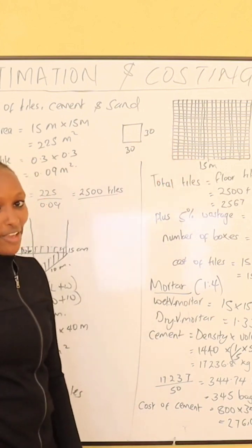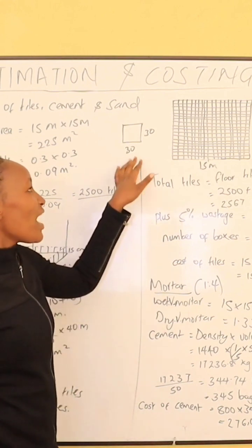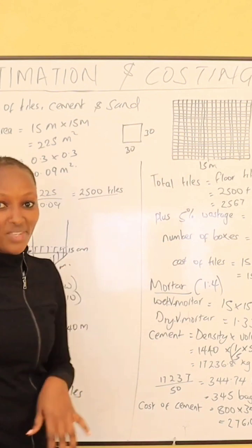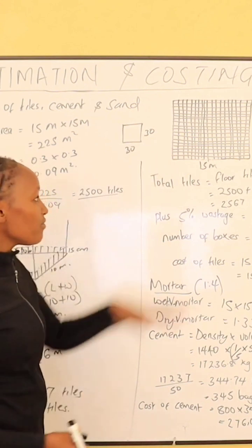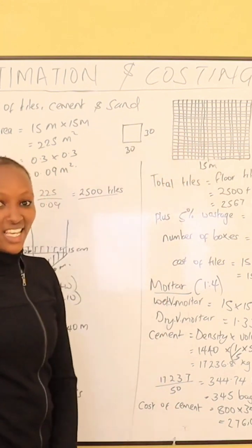The total area is 225 meters squared. One tile we shall take is 30 centimeters by 30 centimeters. Since we are dealing with meters, the length of the tile in terms of meters shall be 0.3 by 0.3 meters.